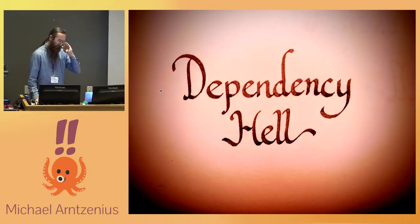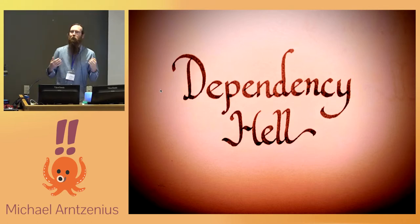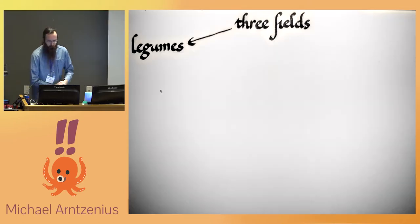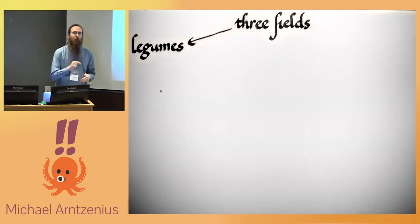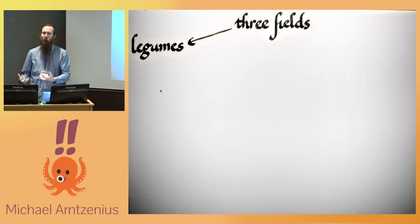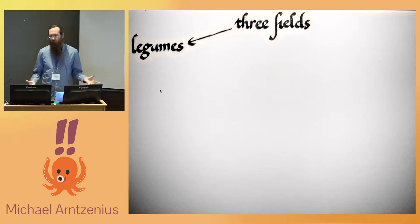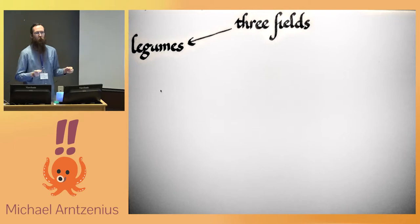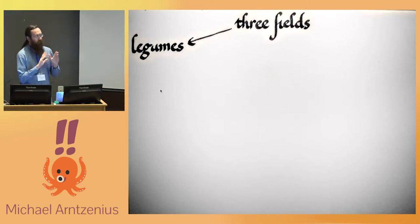What do I mean when I say they were in dependency hell? Let's look at some of the things that needed to change in order to support this simple change from two fields to three fields. First, you can't just grow any crops — you need to grow some crops that fix nitrogen in the soil. Cereal crops take nitrogen out of the soil; if you grow that on two thirds of your land, it doesn't have enough time to recover. But if you grow the right crops in the right order — in particular legumes, which add nitrogen to the soil — then you're good.